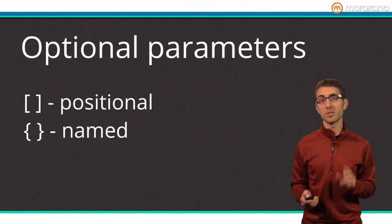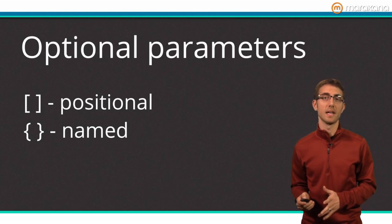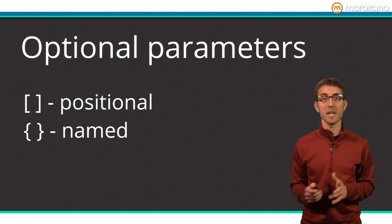To briefly recap, there are two ways to define optional parameters. Square brackets for optional positional parameters, and curly braces for optional named parameters.